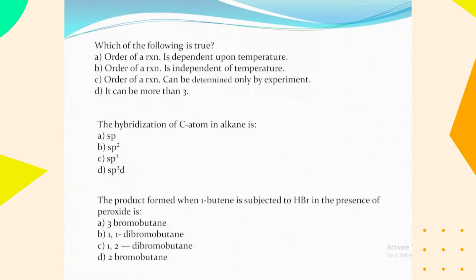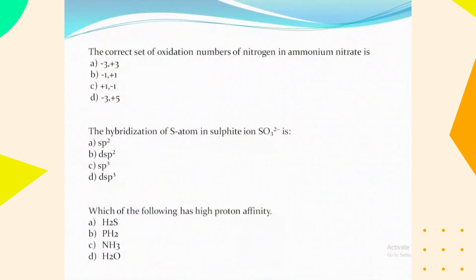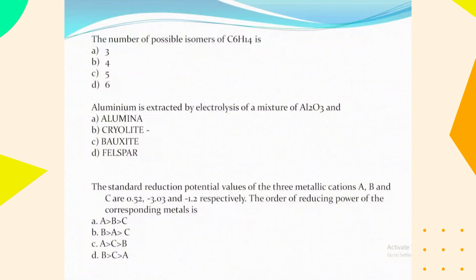Chemistry section. The order of a reaction can be determined only by experiment; we cannot determine it through any other process such as dependence on temperature. The hybridization of carbon atoms in alkanes is sp³. The product formed when 1-butyne is subjected to hydrobromination in the presence of peroxide is 1,1-dibromobutane. The correct set of oxidation numbers of nitrogen in ammonium nitrate is –3 and +5. The hybridization of the S atom in sulfite ion SO₃²⁻ is sp³. The species with the highest proton affinity is NH₃ (ammonia).